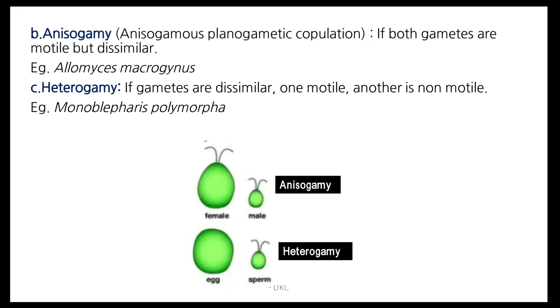Heterogamy: here both gametes are of different sizes and one is motile while the other is non-motile. This is present in Monoblepharella.